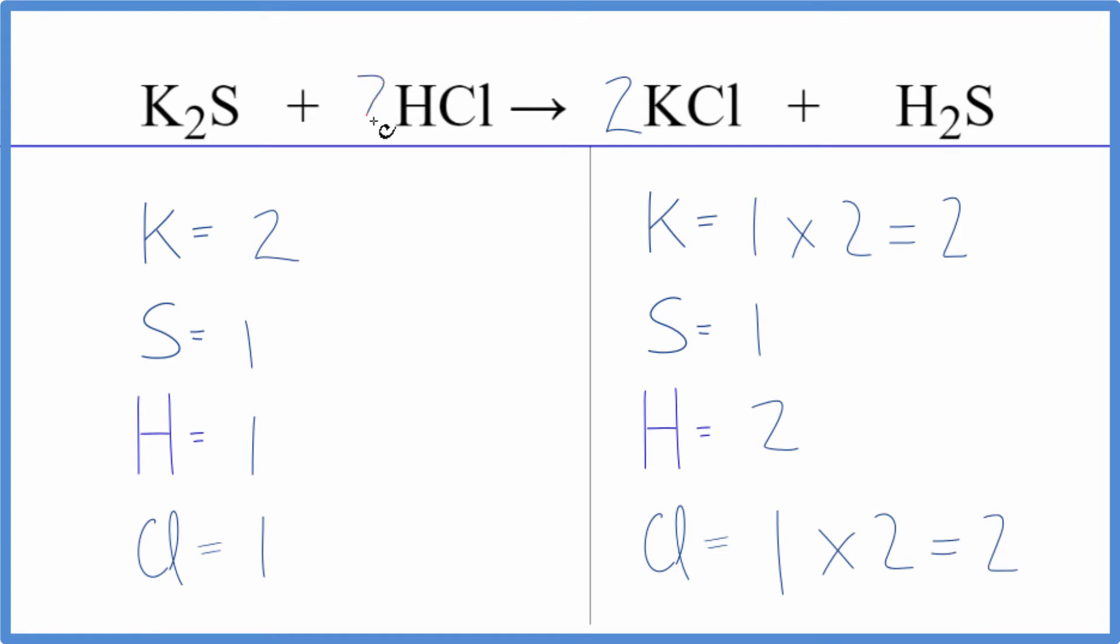Let's just put a two in front of the HCl. One times two, that actually balances the hydrogens. One times two, that balances the chlorine atoms. And we're done.